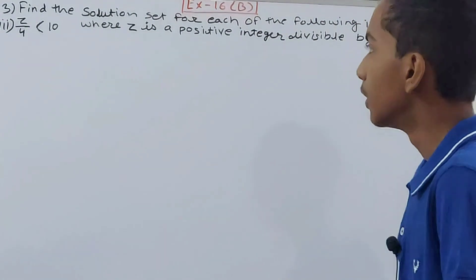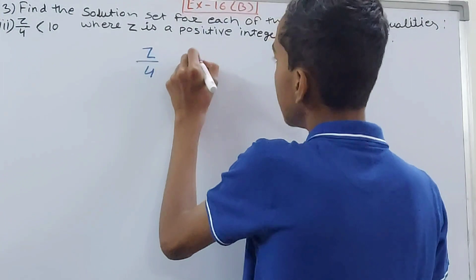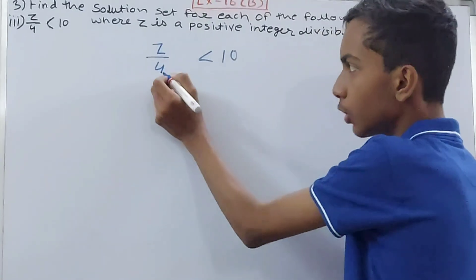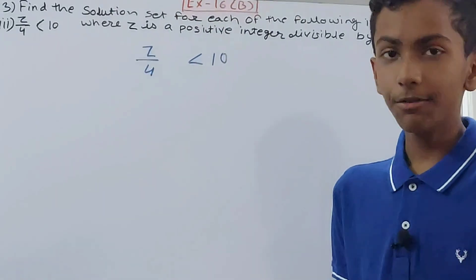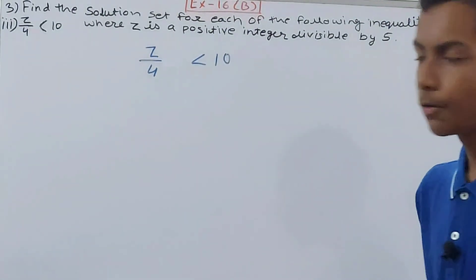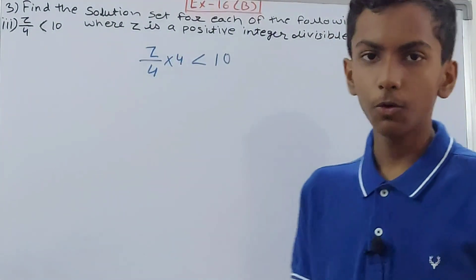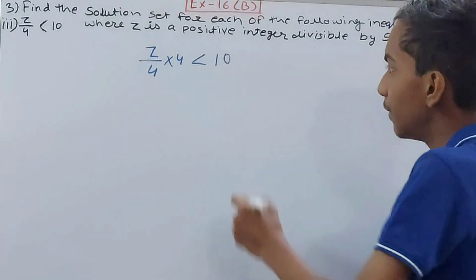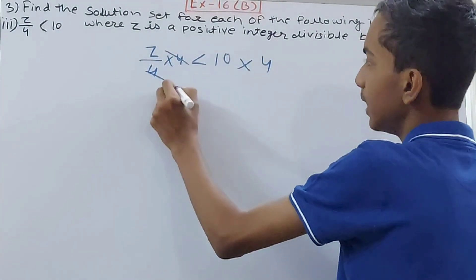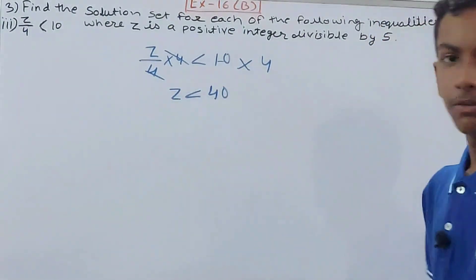Next, we have z divided by 4 is less than 10. To get rid of the 4 in the denominator, I multiply both sides by 4. On the left, 4 and 4 cancel, and on the right, 10 times 4 gives 40. So z is less than 40.